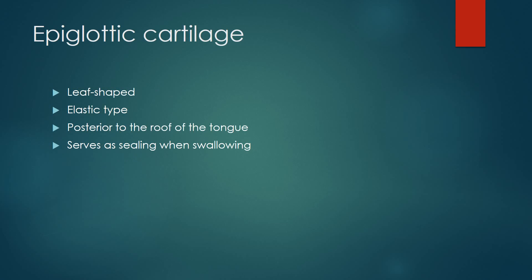The epiglottic cartilage is a leaf-shaped elastic type of cartilage. It is mucus covered and is posterior to the roof of the tongue. It forms the superior anterior border of the larynx. It serves as a seal when we swallow — when you swallow, the epiglottic cartilage moves downward, blocking the larynx and preventing food entry, so all food slides straight into the esophagus.